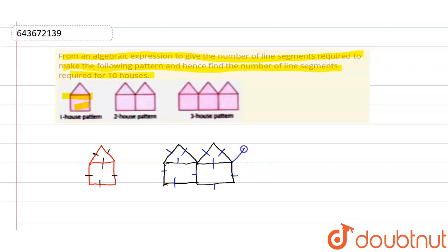Similarly, if we draw the third hut, we can see that it also consists of only five line segments, because one side is common: 1, 2, 3, 4, 5.